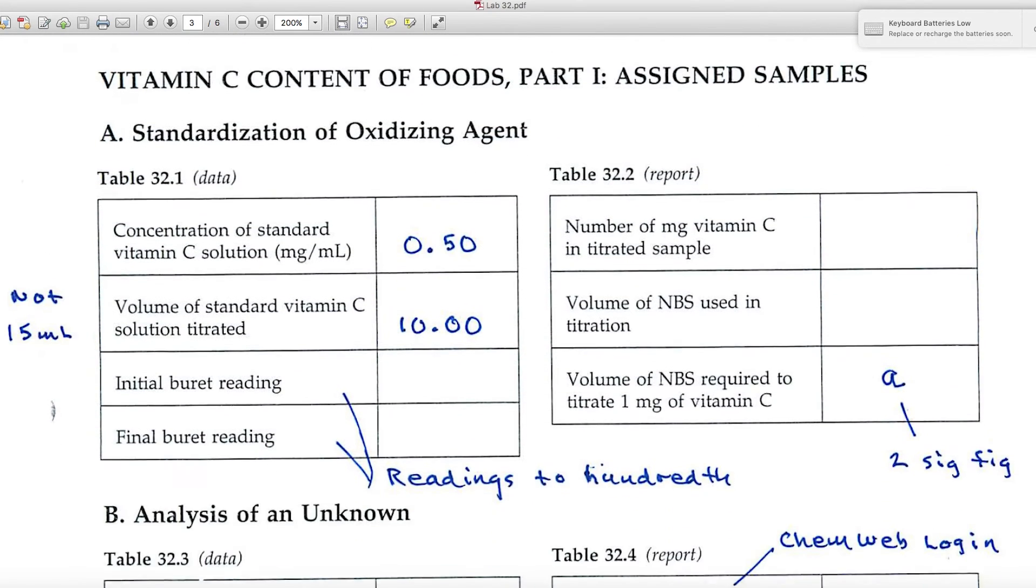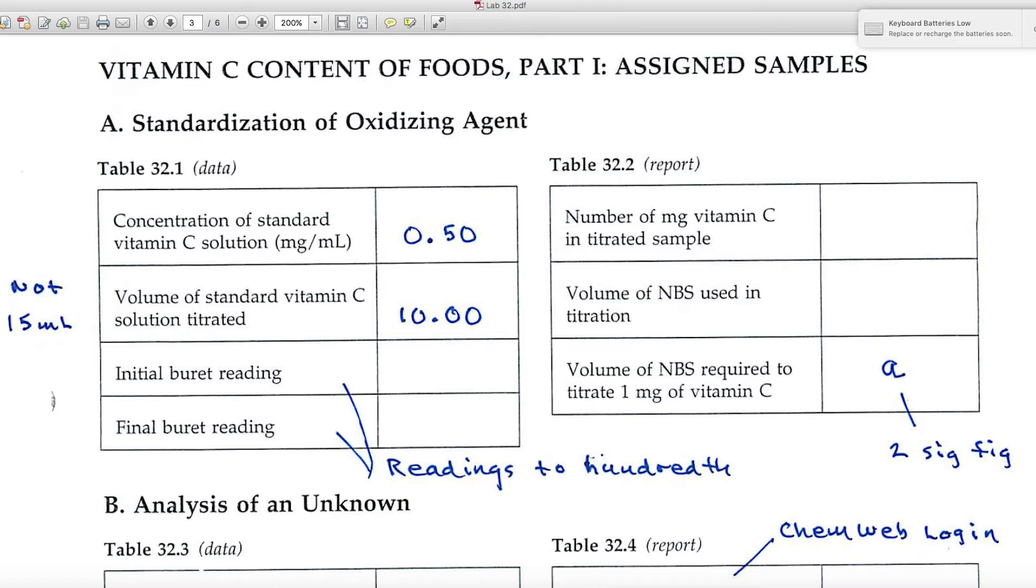Now Part A deals with the standardization of the oxidizing agent, the NBS. The very first bit of data that you'll enter: the concentration of standard vitamin C in milligrams per milliliter, and that's 0.50. I'll give you that number. It's in your reading, but it's a rather critical number.